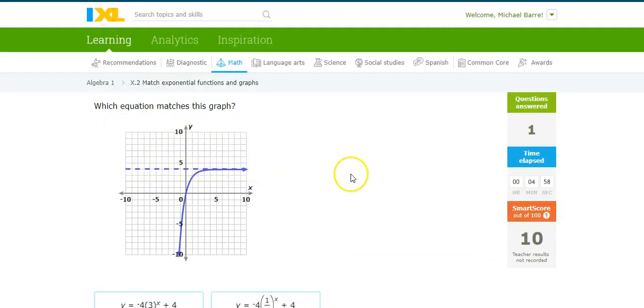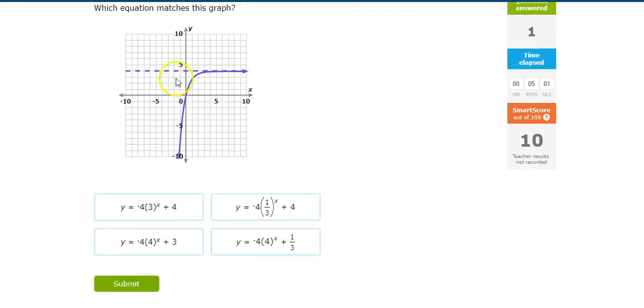Okay. Try one more. Which equation matches this graph? Once again, I'm going to be looking at x equals 0 and what's the y that goes with that, and x equals 1 and what's the y that goes with that. Let's see what happens here.